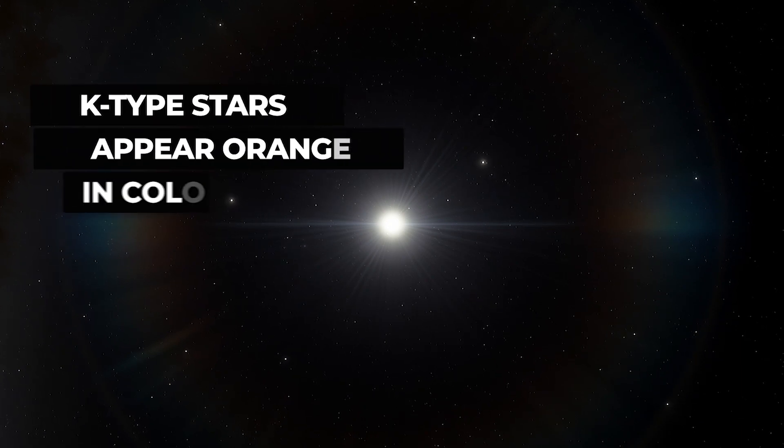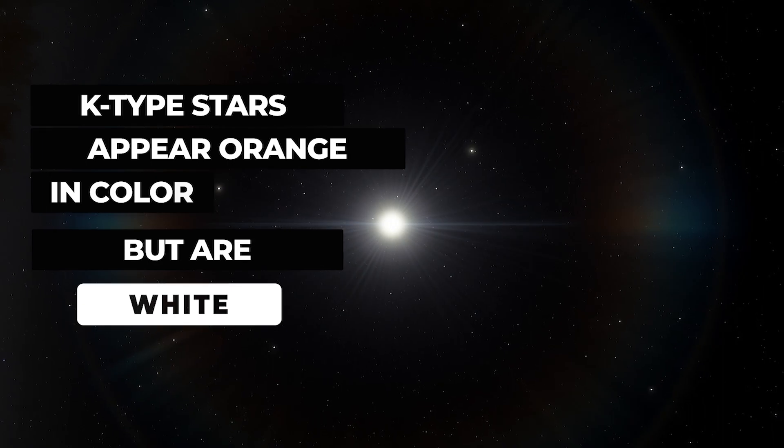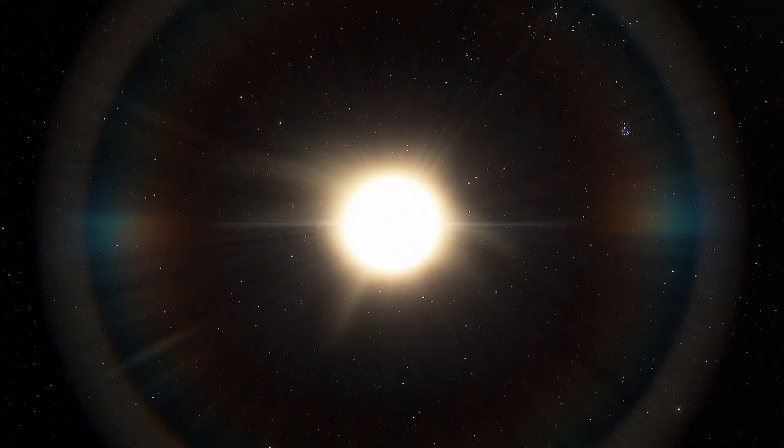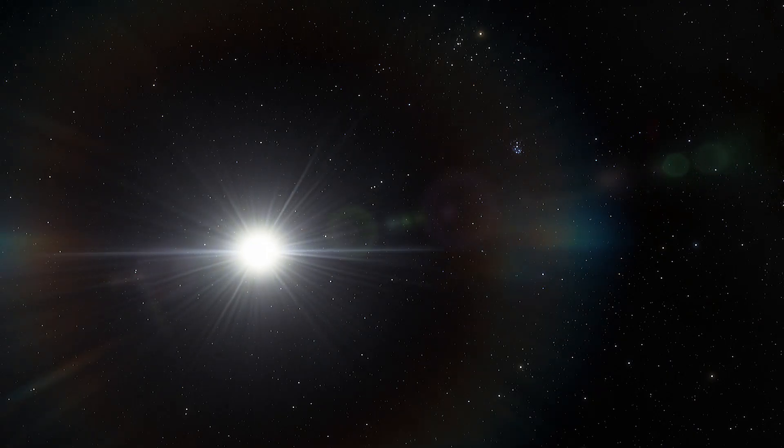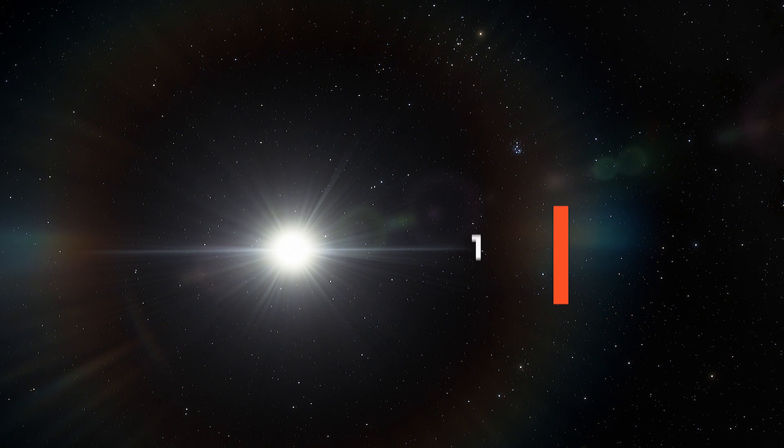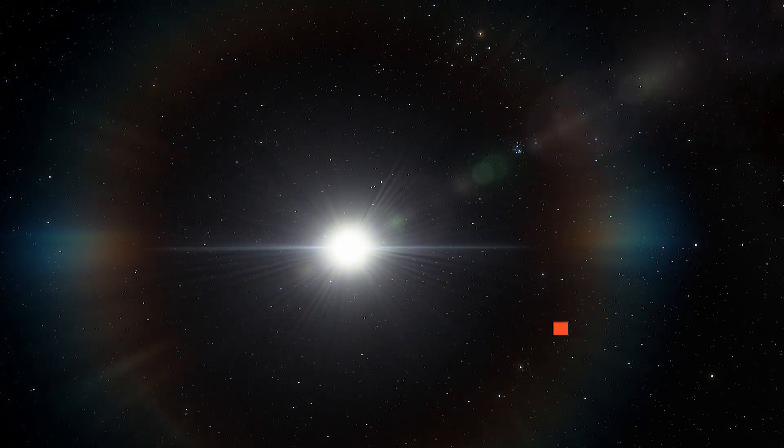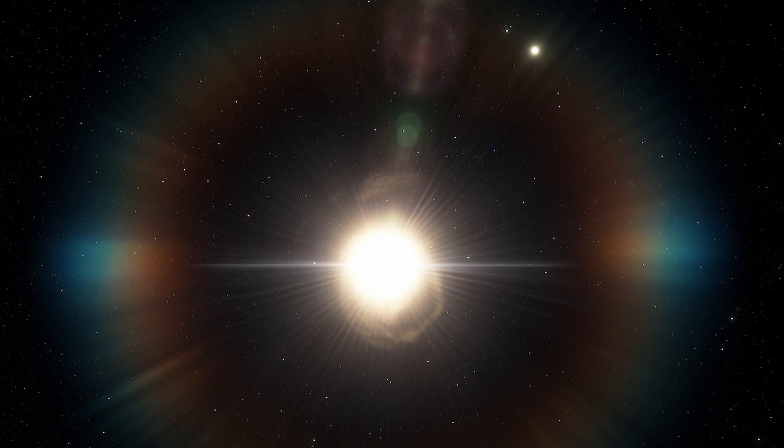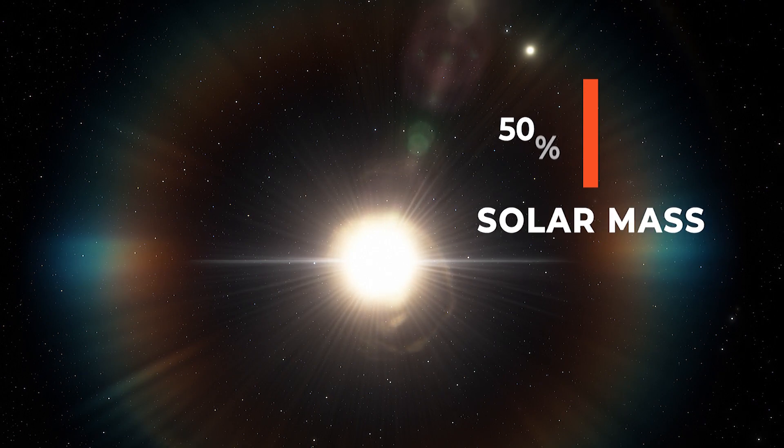K-type stars appear orange in color, but like most stars, are white. The luminosity of such stars is approximately between 10% and 50% of that generated by our sun. They are also a little less massive than our star, having between 50% and 80% the mass of the sun.